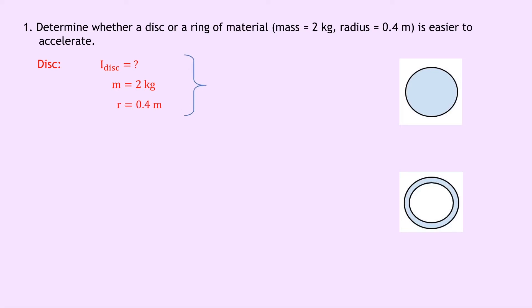And you'll get this in the relationship sheet in the exam. So it says that I_disc equals a half times mr squared and substituting in the numbers we have a half times 2 times 0.4 squared and putting that into your calculator gives a final answer of 0.16 kilogram meters squared.